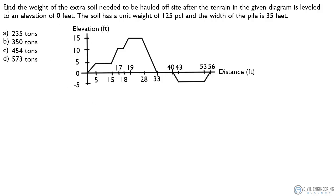Find the weight of the extra soil needed to be hauled off. The soil has a unit weight of 125 pcf and the width of the pile — this whole pile — is 35 feet. So you can see we've got a lot of soil that needs to be removed and a little soil needs to be filled, so there's going to be some extra soil to haul off. Notice the units are in tons, not in pounds.